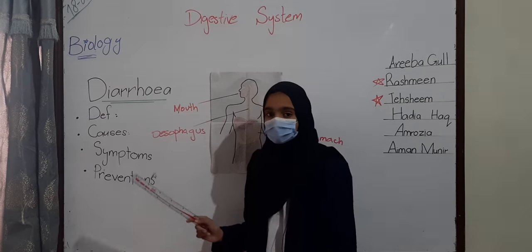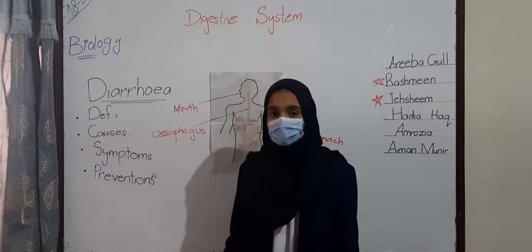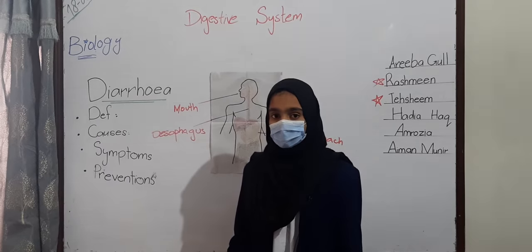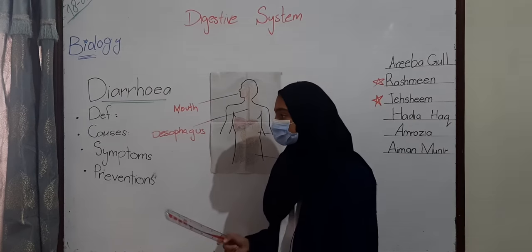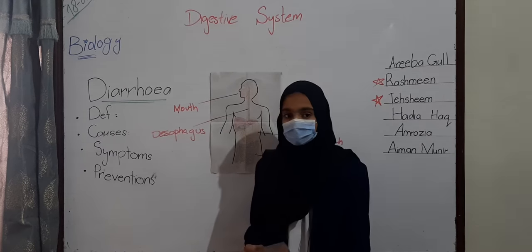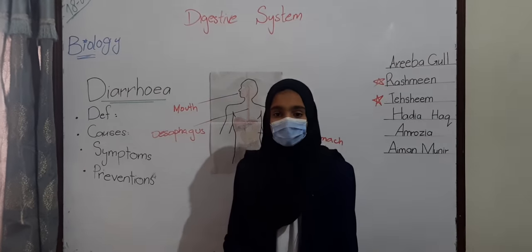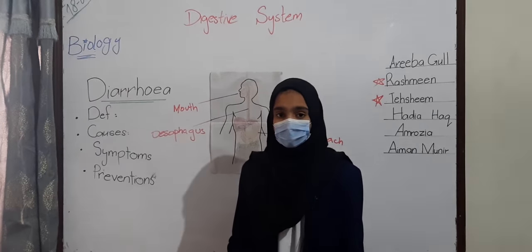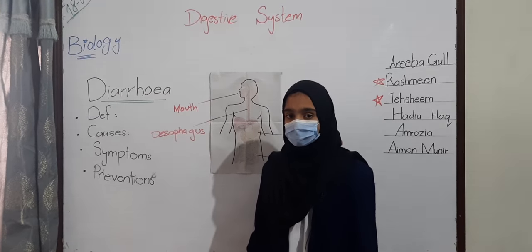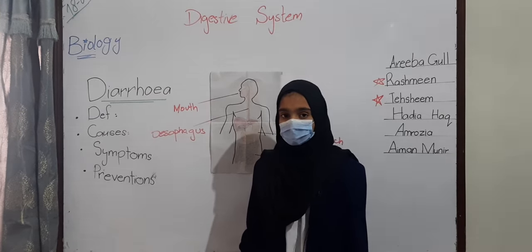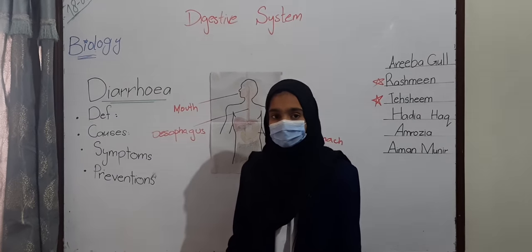Symptoms of diarrhea include abdominal pain, cramping, bloating, nausea, loose motion, fever, and others. Prevention: We can prevent diarrhea by taking lemonade, always washing your hands after using the toilet, and not eating undercooked meat or eggs.